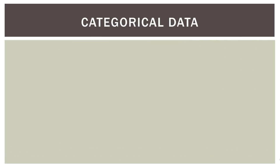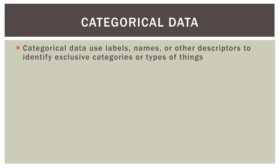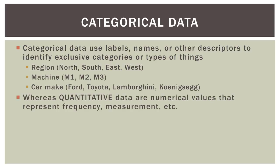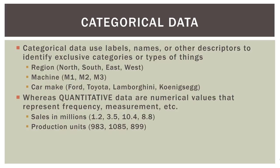I talked in the last video about categorical data. Remember that categorical data uses labels, names, or other descriptors to identify exclusive categories or types of things — so region, machine, or car make. Whereas quantitative data are numerical values that represent frequency, measurement, et cetera. So categories versus quantitative data — we could have sales in millions of dollars, or the number of production units made by machines, or the fastest car made by each manufacturer.